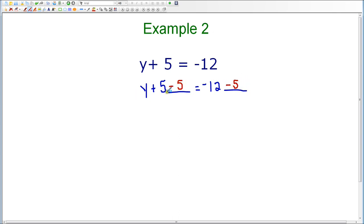I know that 5 minus 5 is 0. That's how I get rid of the plus 5 on the left-hand side. Therefore, I'm left with y equals. I'm actually left with y plus 0 equals, but since it's 0, I just have to write y equals.